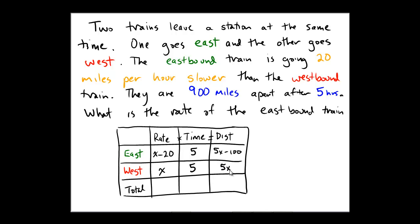Now what does this information tell us all together? We have the distance traveled by the eastbound train, which is 5x minus 100, and the distance traveled by the westbound train, which is 5x.